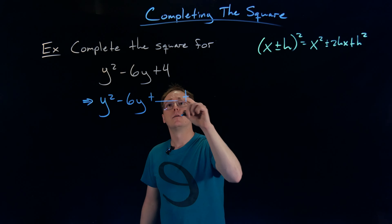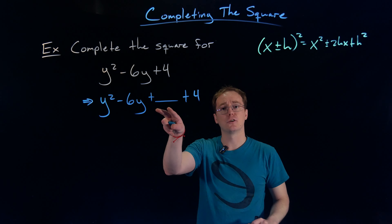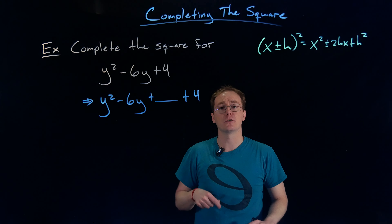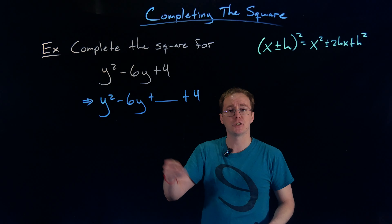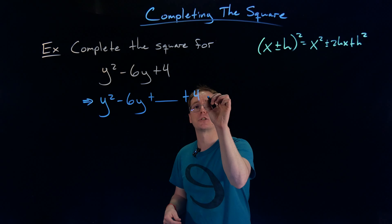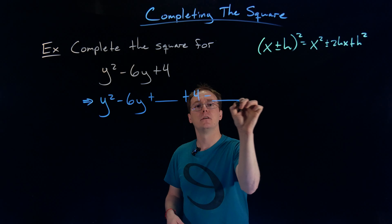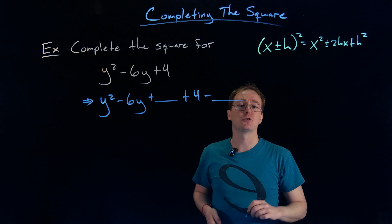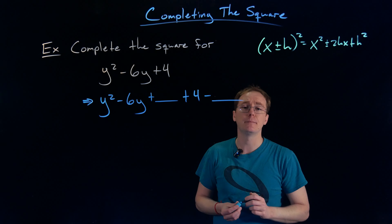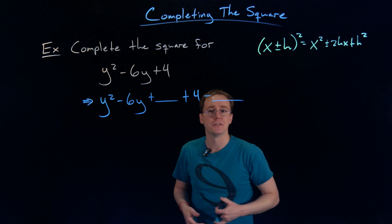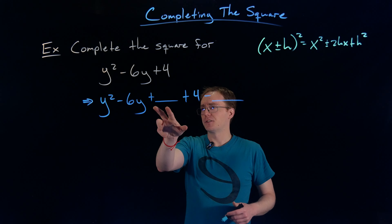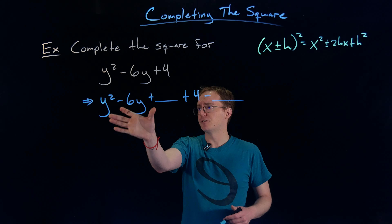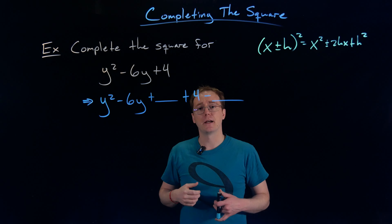We still have to keep in mind that we have a plus 4 here. Eventually we're going to add a constant term here to make these first three terms a perfect square trinomial. But we can't just add a number to an expression — we can only add 0 to an expression without changing what it's representing. So whatever we add in here, we have to subtract away over here to keep things balanced, or to really just add by zero in a fancy way. Now we have to figure out what is the correct constant term we need to make these first three terms a perfect square trinomial.